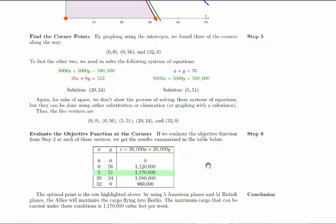So again, that's the process of a linear programming problem. We defined the variables. We constructed the objective function. And then we defined the constraints and graphed the feasible region, found the corners, and then finally evaluated the objective function at the corners to find the optimal point.